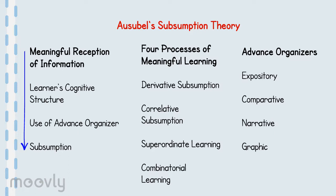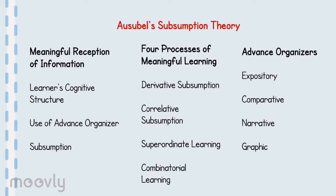The most important single factor, according to Ausubel, influencing learning is what the learner already knows. Information learned by rote, nonsense syllables, and meaningless word pairs cannot be anchored to major elements in the student's cognitive structure to form linkage to it. Laboratory studies have shown that information learned by rote actually inhibits subsequent learning of additional similar information, and even information learned by rote that is forgotten inhibits learning of similar new information. The reverse effect operates after meaningful learning.